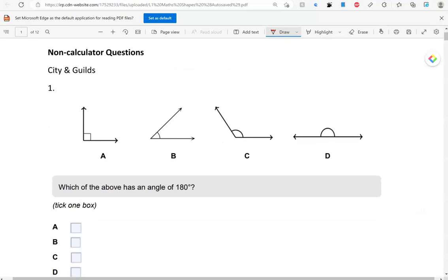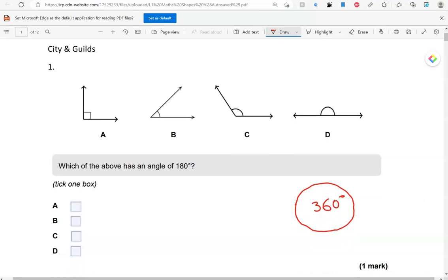Here is the first one. Which of the above has an angle of 180 degrees? I'll start with a circle. Now, you should remember that in a circle, there are 360 degrees. So, 180 is half of that. So, half a circle. That's this angle here. That is 180 degrees. Which one of the four options looks like that? That is D. So, I'm going to tick D.